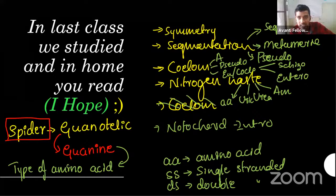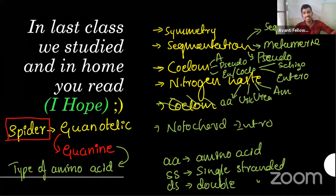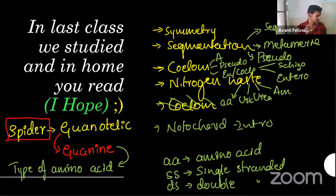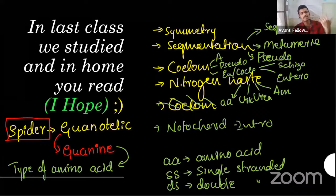Guanine is not present in DNA — DNA contains only four bases. The guanine I'm referring to here is a different kind. You will learn about it in later classes in the biomolecules chapter. Just think of it as a kind of amino acid form. Scorpions also show this — there are very few such organisms.